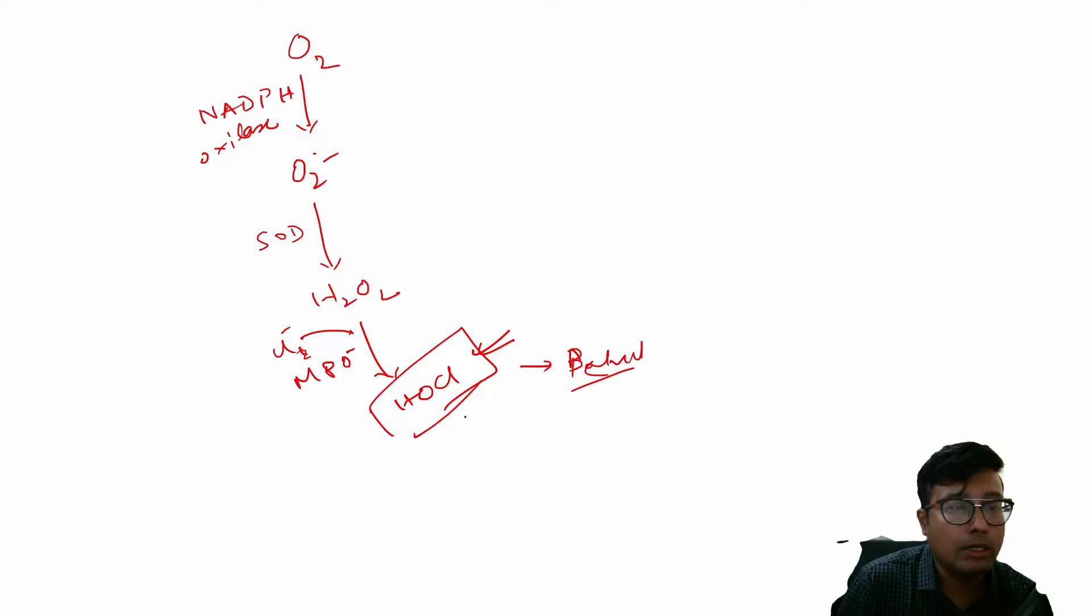We need this HOCl production at all costs and for that we need NADPH oxidase activity, we need superoxide dismutase activity, we need myeloperoxidase activity. This step is actually known as the respiratory burst where oxygen is converted to O2 minus free radical.